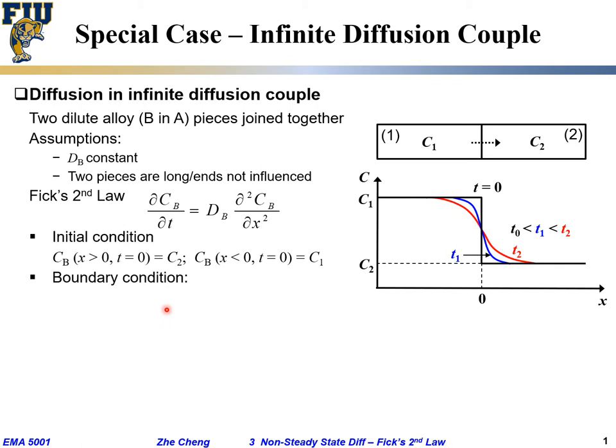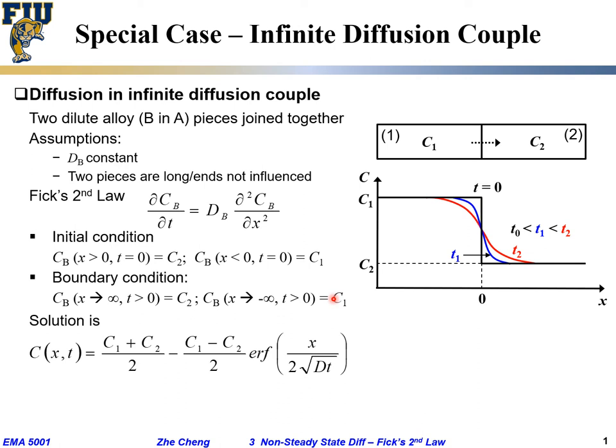What about boundary conditions? When we are very far away from the interface, the local concentration stays at c2 for positive x going to positive infinity, and when x goes to negative infinity the concentration stays at c1. This is our boundary condition, and once we plug it in, the solution takes the form of something like this.